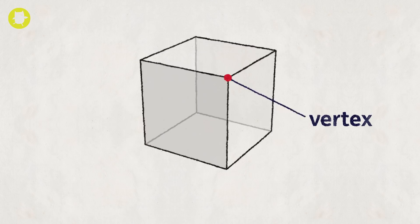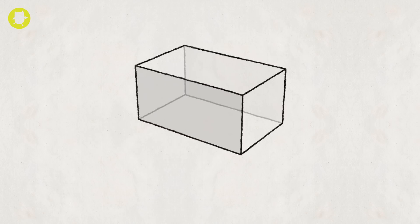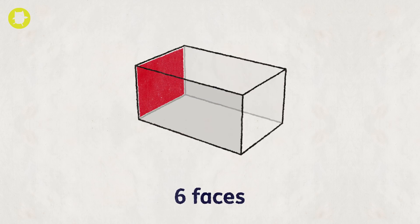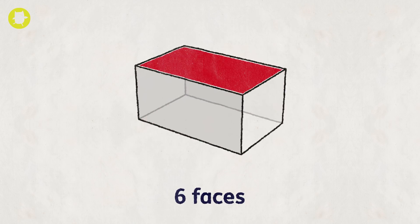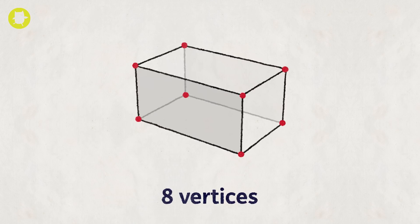A vertex is a point at which two or more lines meet in an object or shape. A cuboid has six faces, eight vertices, and twelve edges.